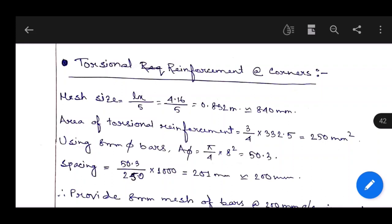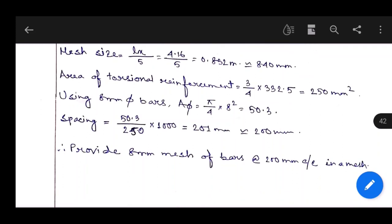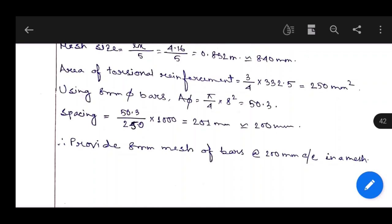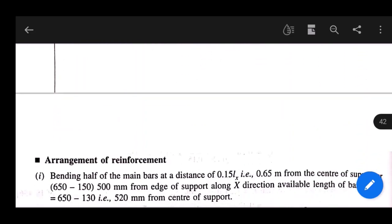Area of torsional reinforcement is three-quarter, 3 by 4 of 332.5, equals 250 mm². Using 8 mm dia bars, spacing is 50.3 by 250 times 1000, equals 201 mm or 200 mm. Provide 8 mm mesh of bars at 200 mm center-to-center in a mesh. Design and reinforcement part is complete. Now time to arrange reinforcement.